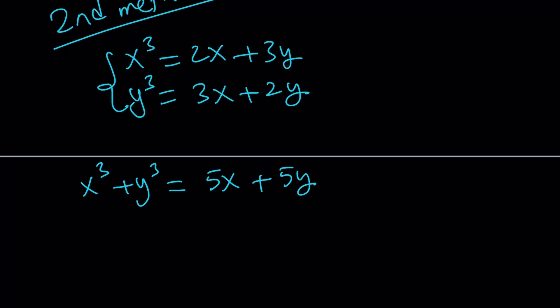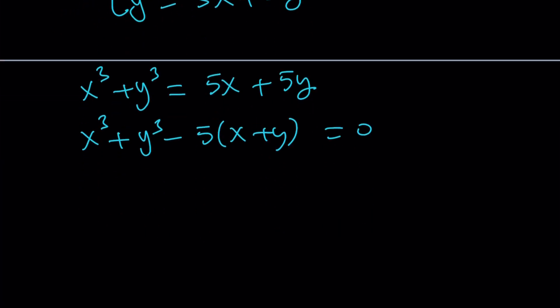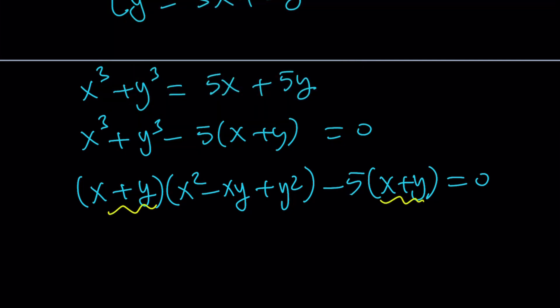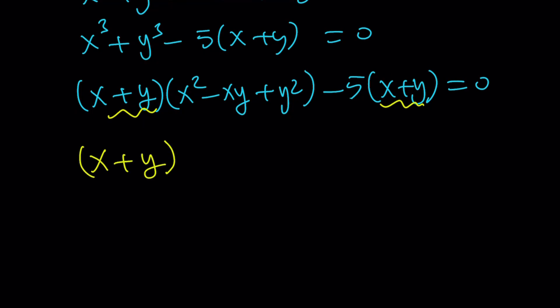So now we can do something similar and factor this. But before we factor it, maybe put this on the left hand side and then start factoring. x³ + y³, it's a sum of two cubes. So we can factor it as (x + y)(x² - xy + y²) - 5(x + y) = 0. Now we have x + y as a common factor, so we can factor that out. We're going to get (x + y)(x² - xy + y² - 5) = 0.